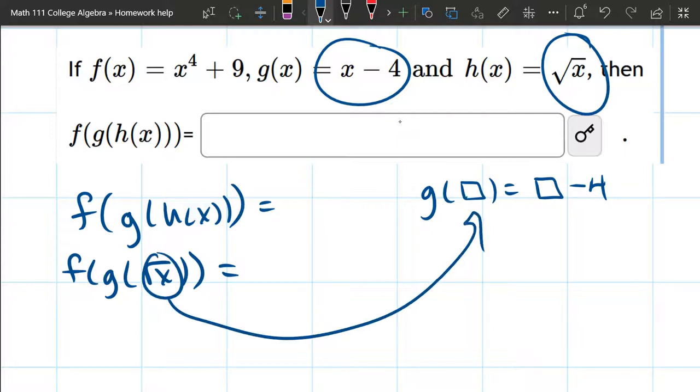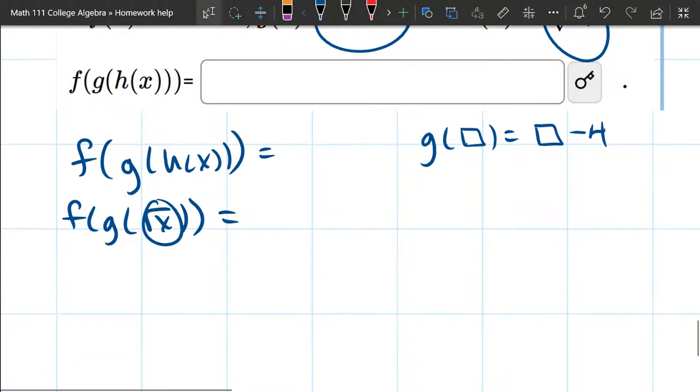So it's going to be square root x minus 4.